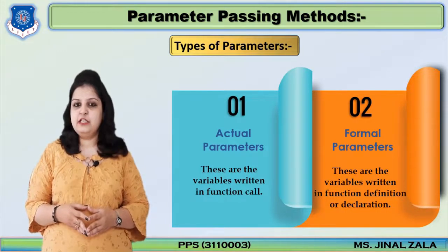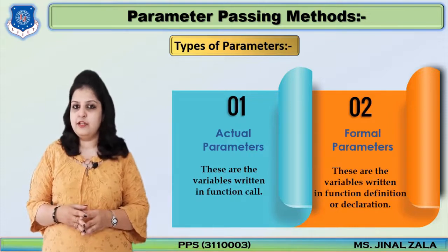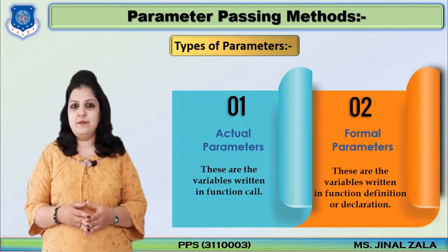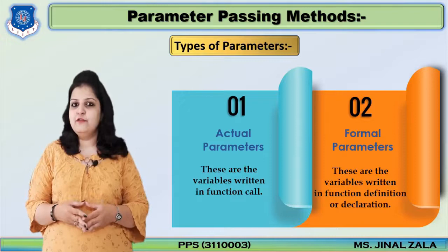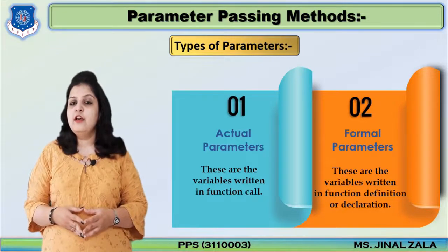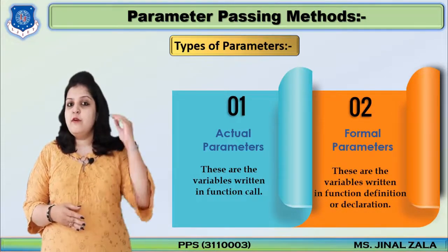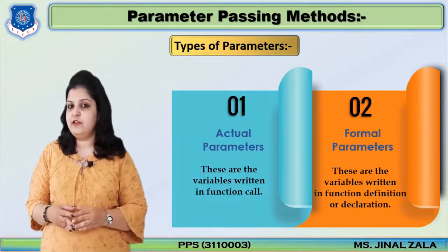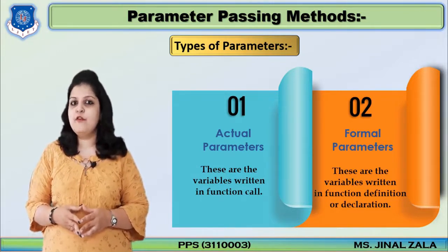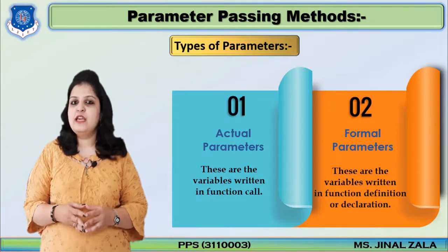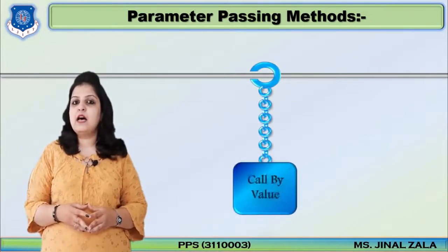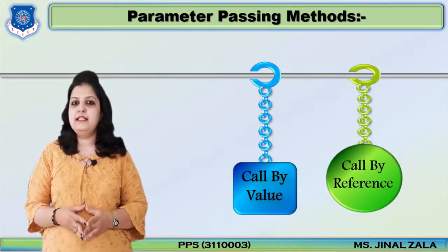What do you mean by actual parameters? When you call the function in our main function, at that time you pass variables — those variables or parameters are called actual parameters, because we are passing the actual values of those variables. And what do you mean by formal parameters? The parameters which are used in the function declaration part and the function definition part — those are all called formal parameters. We can pass our actual parameters in two different ways: first is call by value, and second is call by reference.